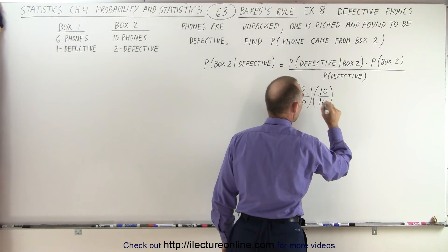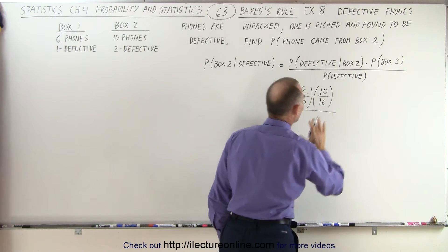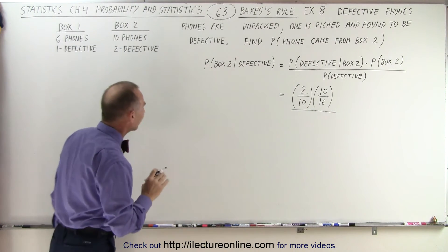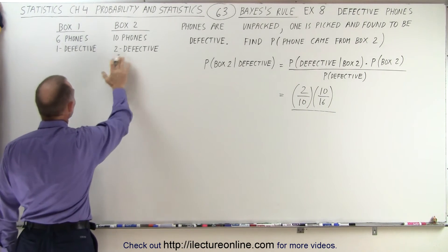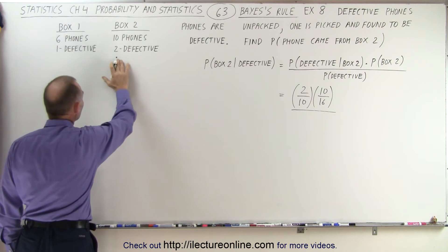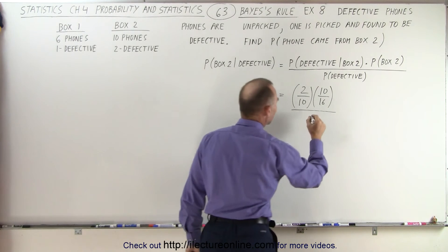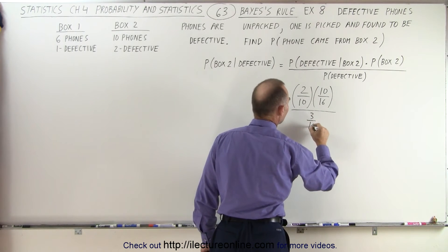Remember we unpacked the phones, and then we divide that by the probability that I picked a defective phone. Out of the sixteen phones, three are defective, so the probability is three out of sixteen.